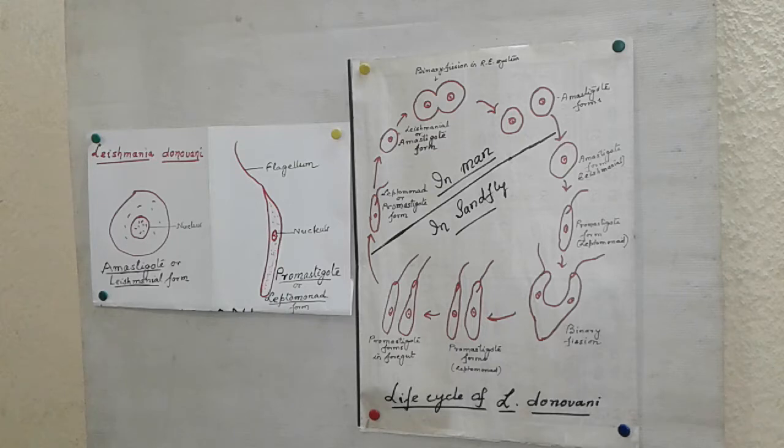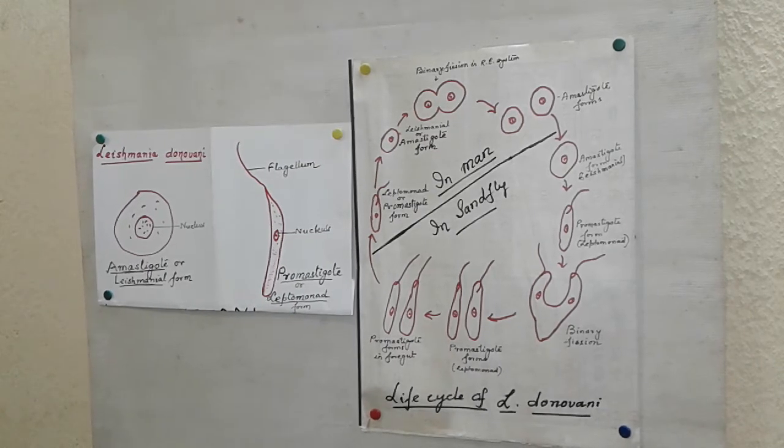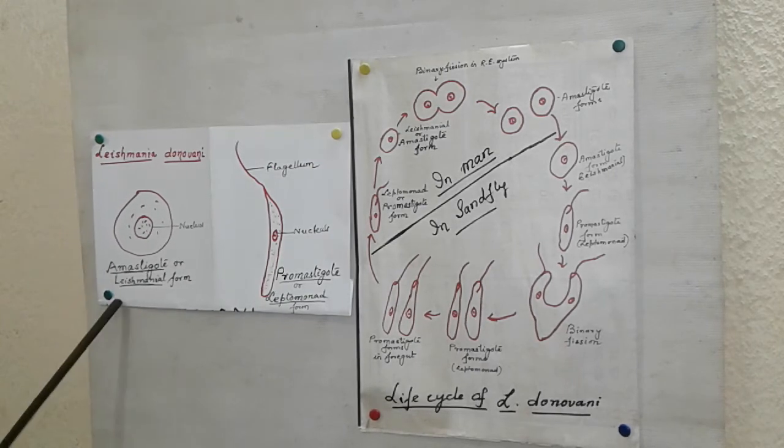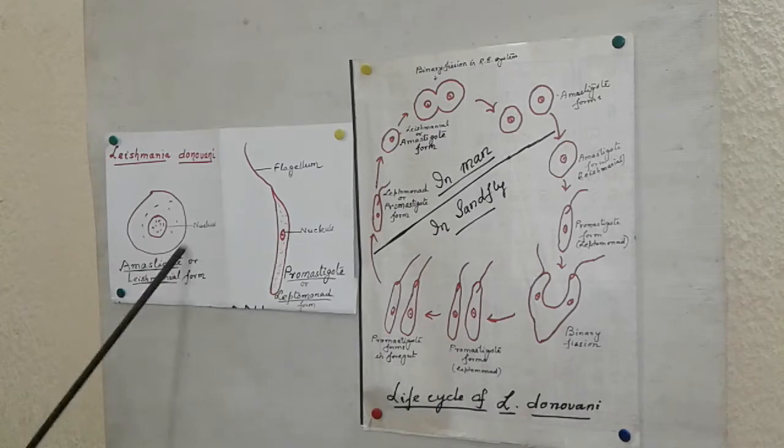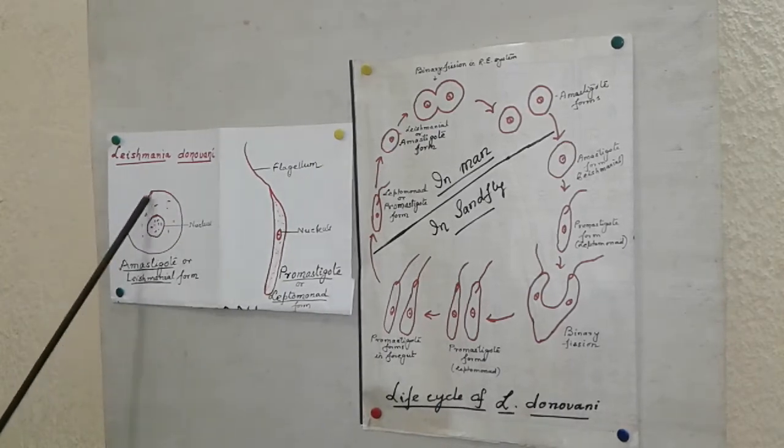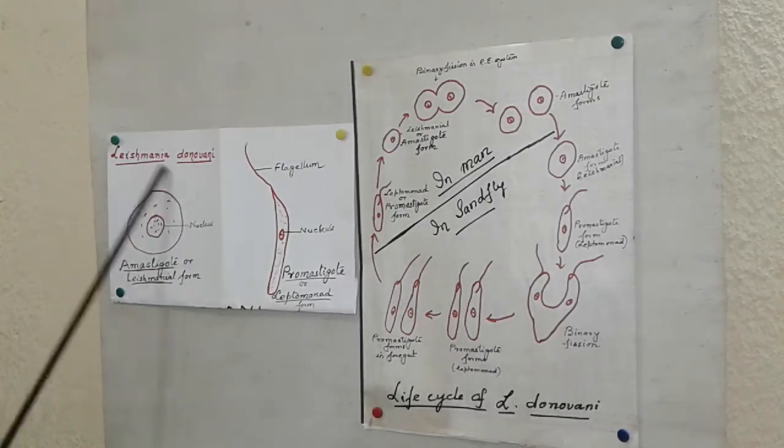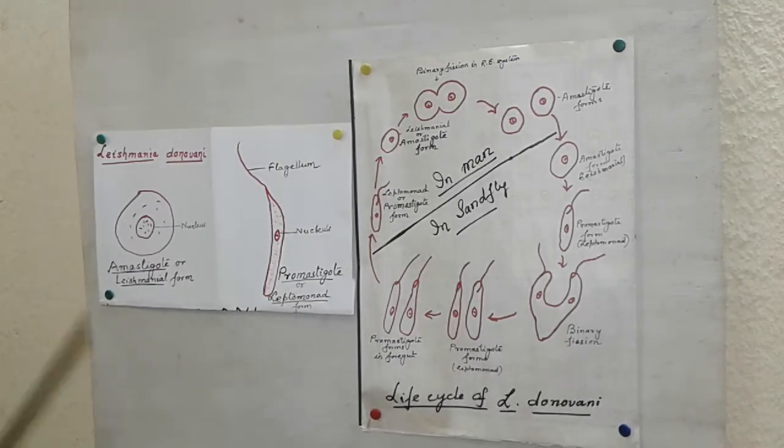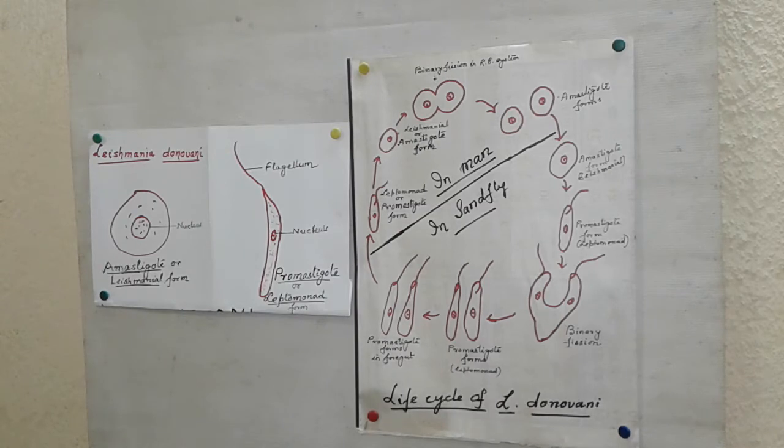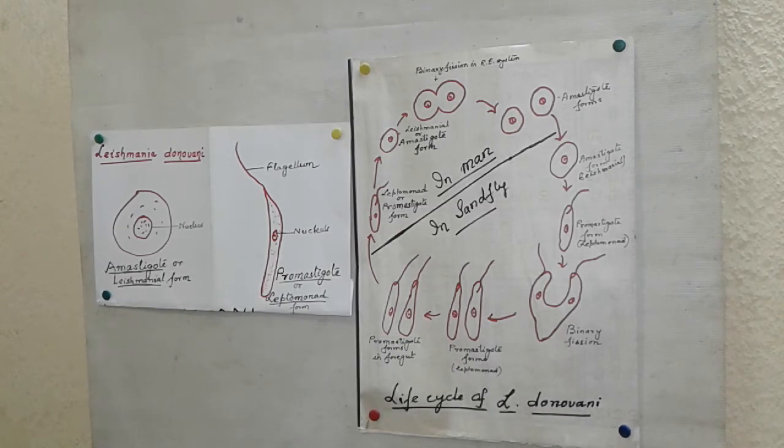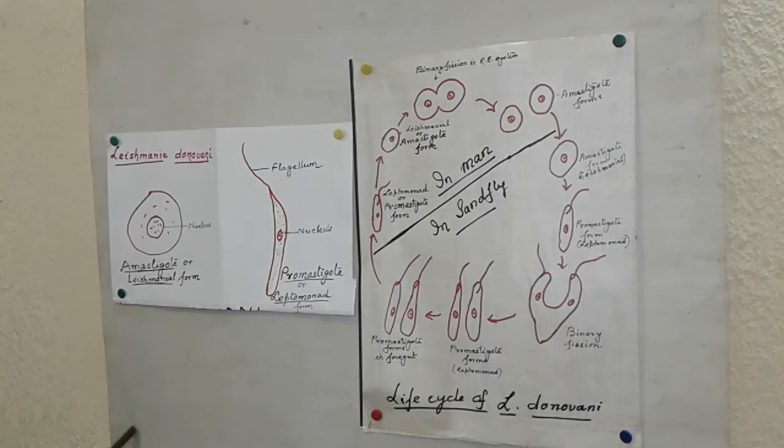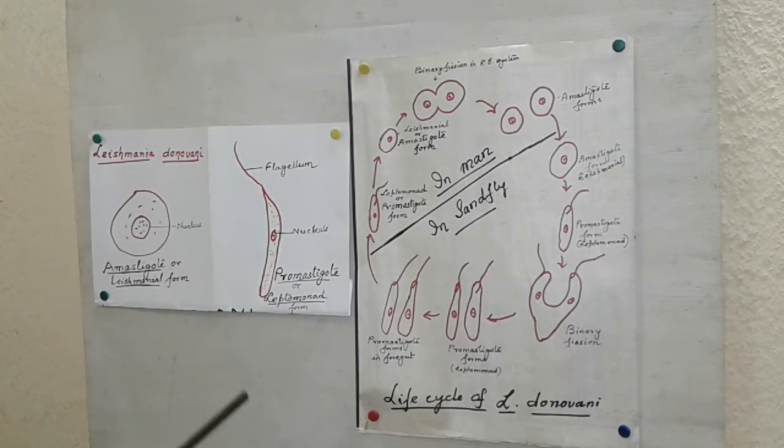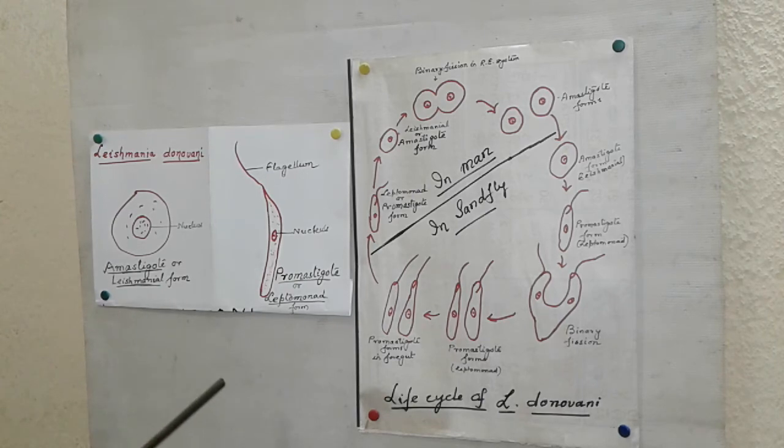Now the structure. Now see the diagram. Leishmania donovani exists in two forms. First is the amastigot or leishmanial form which lacks flagellum. It is almost oval in shape. And the second one is promastigot or leptomonad form which bears flagellum. Amastigot or leishmanial form is oval in shape without flagellum and is found in man, whereas promastigot form or leptomonad form is elongated, bears a flagellum and is found in sand fly, that is Phlebotomas.